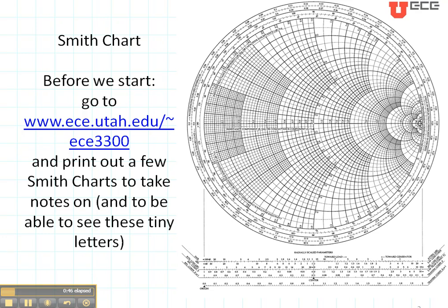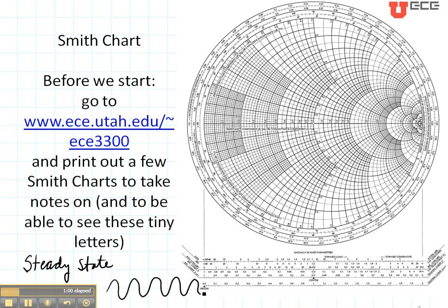A Smith Chart is used to analyze a transmission line that is working in steady state. That means the generator is sinusoidal, so our signal is sinusoidal. All the transients have died away, and now we are working in steady state or continuous wave — sometimes called CW. So it's a sinusoidal excitation with no transients; it has reached its steady state, and that's what we're going to be analyzing with the Smith Chart.